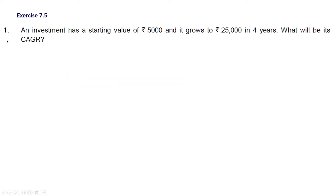Moving on to exercise 7.5, question 1: an investment has a starting value of ₹5000 and it grows to ₹25000 in 4 years. What will be its compound annual growth rate? This is a direct question — use the formula and substitute the values. A similar question was asked for 2 marks in the sample paper, where writing the formula carries 1 mark and getting the final answer carries 1 mark.